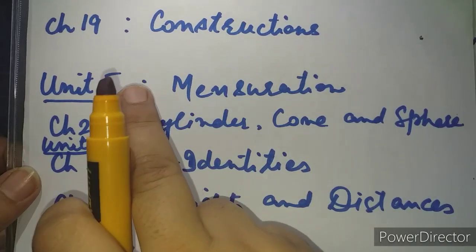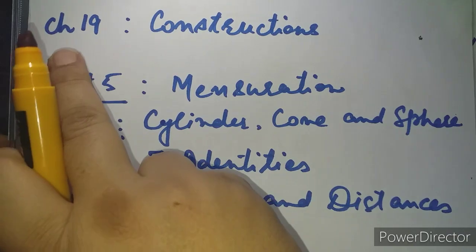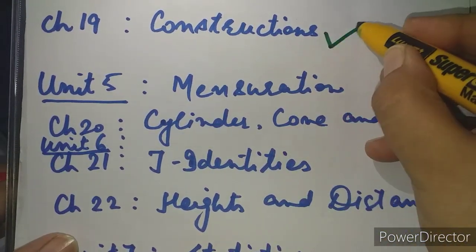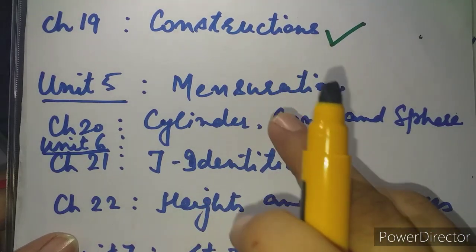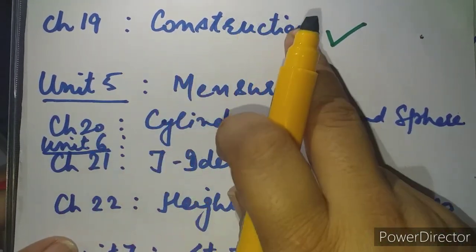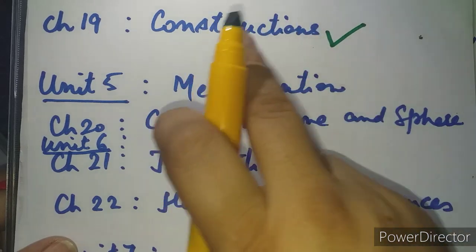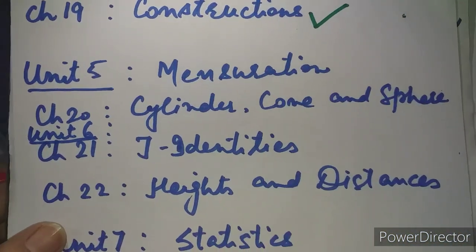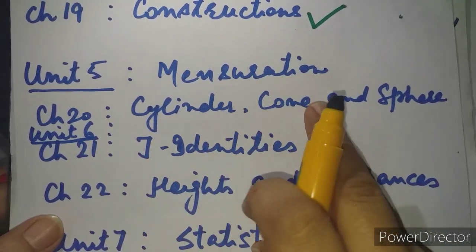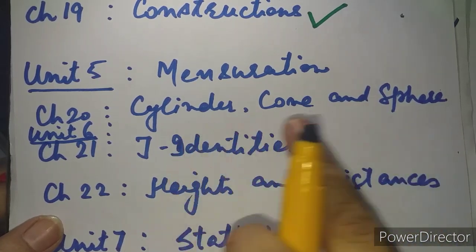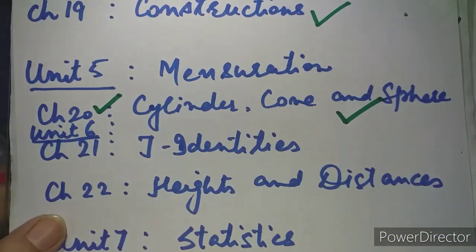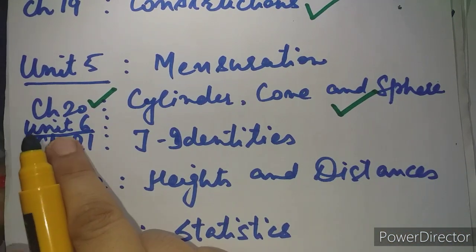There is one more chapter in geometry I missed — Chapter 19, Constructions, has been included as it is without any change. So geometry actually has five portions, and out of that, Constructions and Circles have been included as is. Unit Number 5, Mensuration — cylinder, cone and sphere, their surface areas and volumes — has been included without a single change, so Chapter 20 gets a green signal.